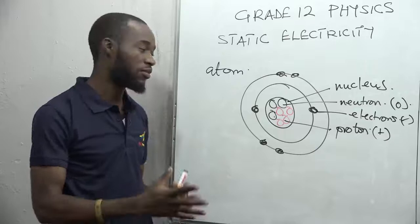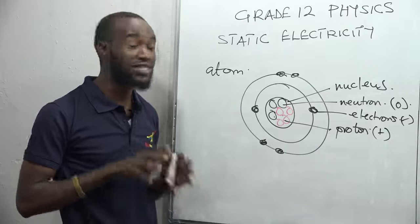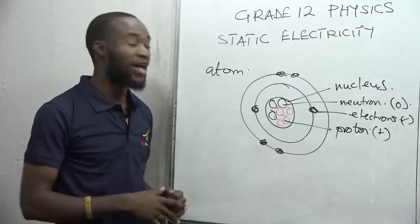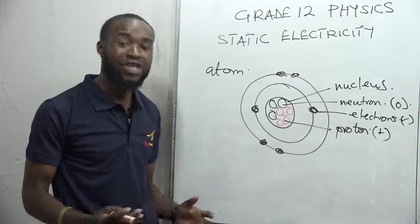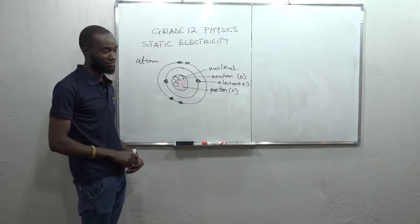When an atom begins to involve itself in chemical reactions, it begins to lose and gain electrons. In static electricity, we will be looking at how electrons move from one surface of a material to another. When an atom gains electrons it becomes negatively charged, and when it loses electrons it becomes positively charged. So if a material loses electrons it attains a positive charge, and when it gains electrons it attains a negative charge.